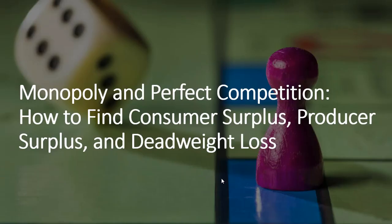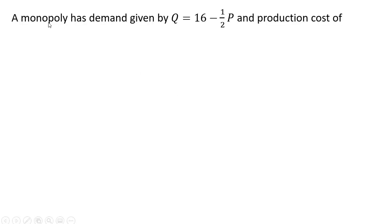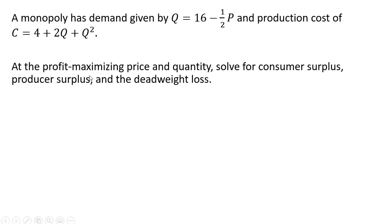In this video we're going to find consumer surplus, producer surplus, and the deadweight loss under monopoly and then under perfect competition. A monopoly has a demand given by the following equation, and its production cost is given by this equation. At the profit maximizing price and quantity we want to solve for the monopolist consumer surplus, producer surplus, and deadweight loss.